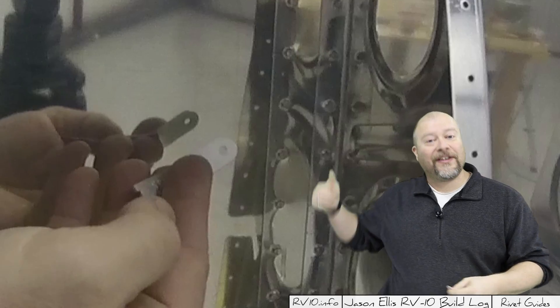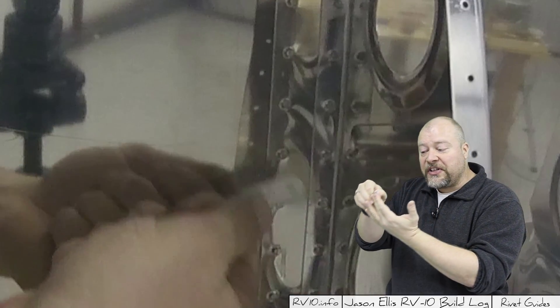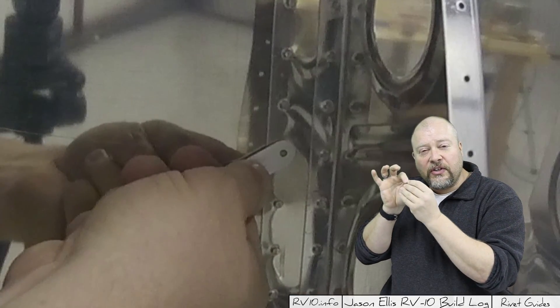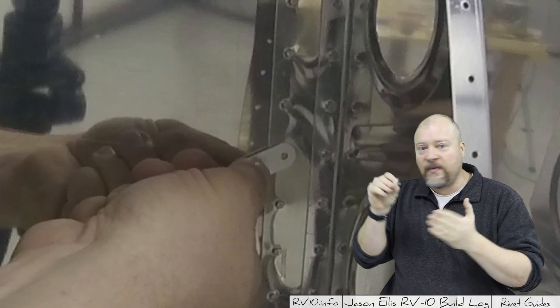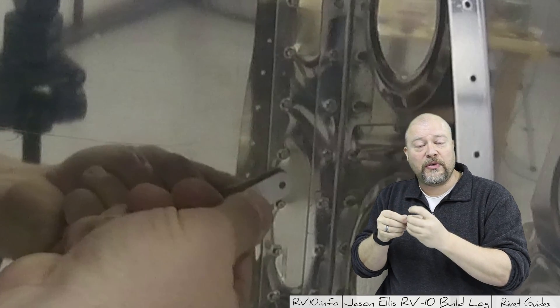The idea behind the hole, as you can see here, is that you should be able to slip it over the rivet just enough so that it will actually sit there and hang by itself on the rivet. It shouldn't be too tight, it shouldn't be too loose.